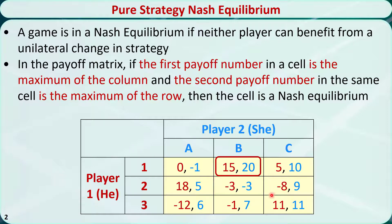The maximum number of player 1's payoff in the third column is 11. Let's check if player 2's payoff is the maximum of the row. Yes, 11 is the maximum number. So this cell is also an equilibrium.